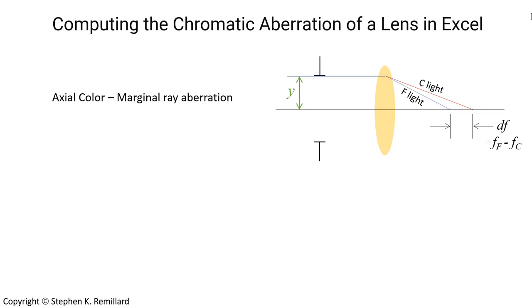In this video I'll present how to calculate the chromatic aberration of a lens in Excel. I'm going to focus specifically on what's called the axial color, and let me explain why.